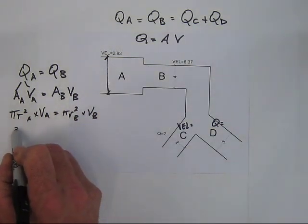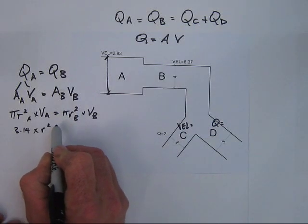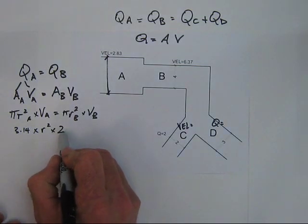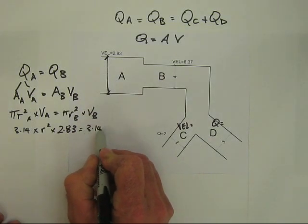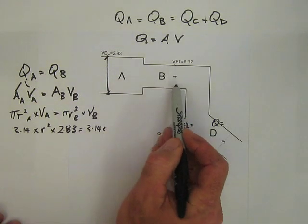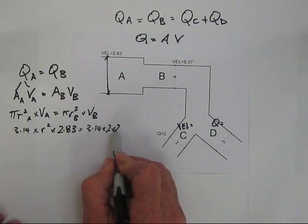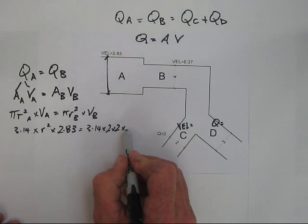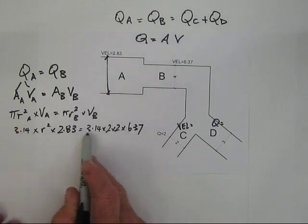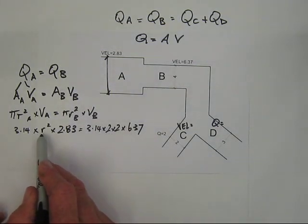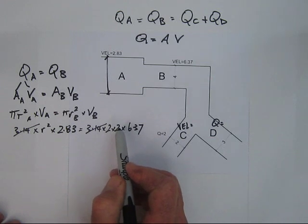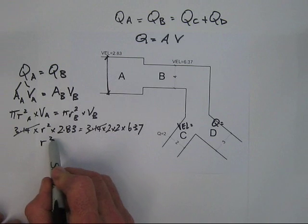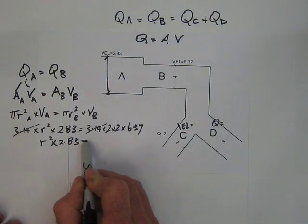We know pi is 3.14. We don't know the radius at A, but we know the velocity at A is 2.83. On the right side, we have pi times the radius at B squared times the velocity at B, which is 6.37. The diameter at B is 4, so the radius is 2. Since pi appears on both sides, we can cancel it out.